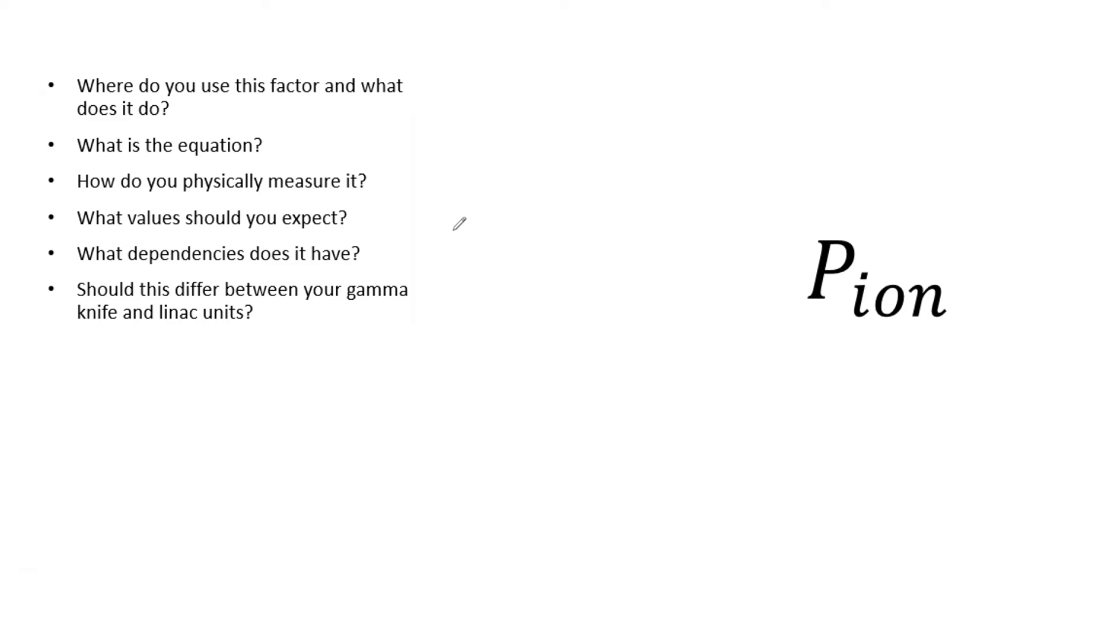So to begin, P ion is the ion recombination factor. It accounts for ion recombination in the chamber before ions are collected by the central electrode. You use it for TG51 or anytime you want to calculate what the dose is in a gas filled chamber.